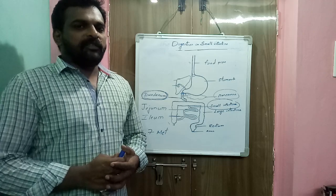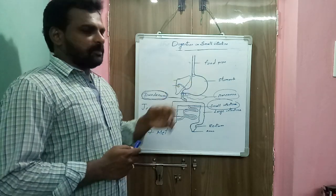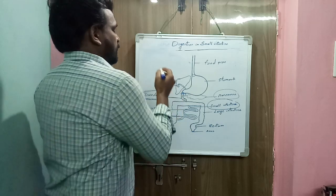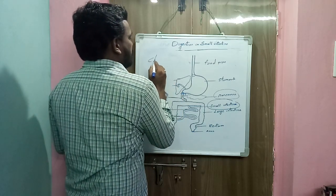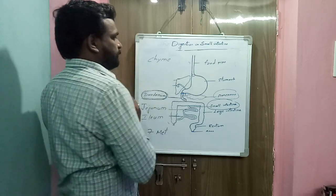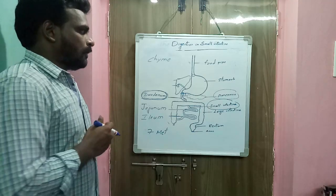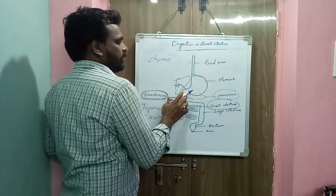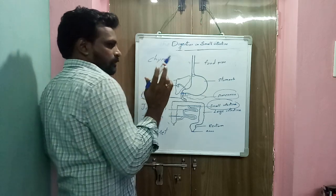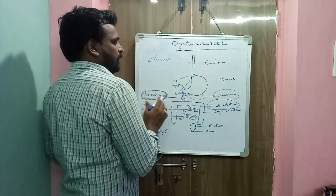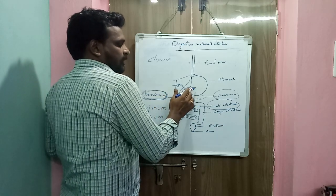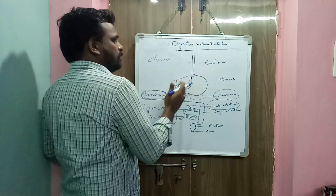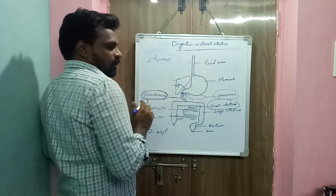As discussed in a previous class, after digestion in the stomach, food is converted into a semi-liquid or pulpy mass called chyme. In Greek, 'chymos' means juice. This chyme passes from the stomach to the duodenum, which is the first part of the small intestine. A sphincter regulates the movement of chyme from the stomach to the small intestine, allowing only a small amount through at a time — this is the function of the pyloric sphincter.